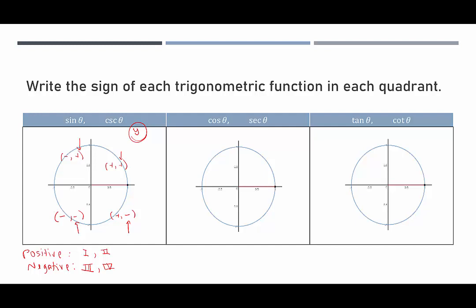Cosine depends on the sign of x. In quadrant one, x is positive so cosine is positive. In quadrant two, x is negative so cosine is negative. In quadrant three, x is negative so cosine and secant are negative. In quadrant four, x is positive so cosine and secant are positive.